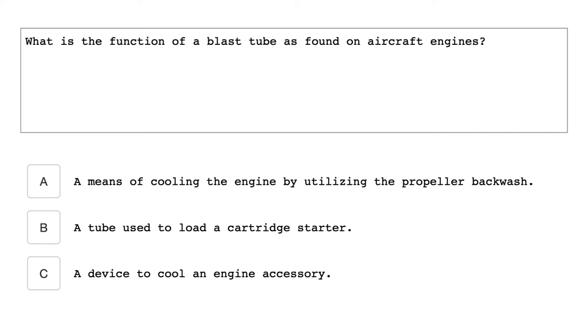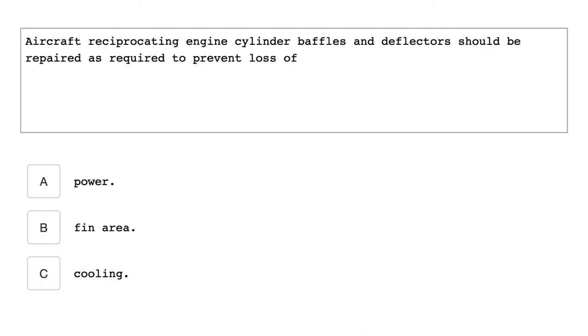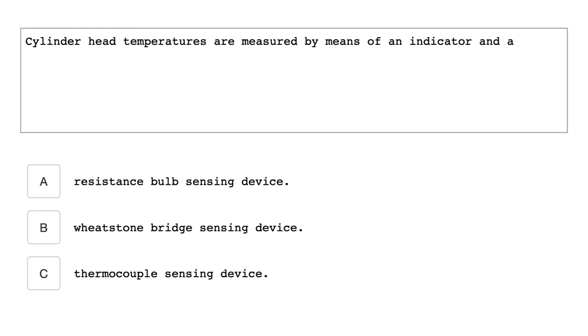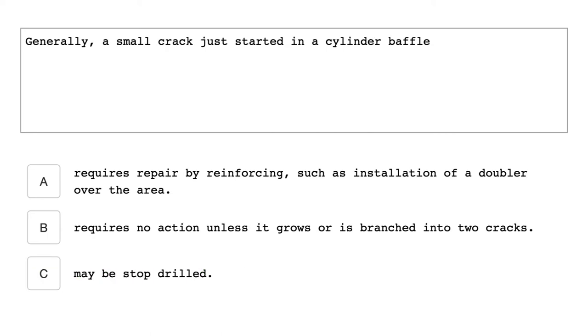What is the function of a blast tube as found on aircraft engines? A device to cool an engine accessory. Aircraft reciprocating engine cylinder baffles and deflectors should be repaired as required to prevent loss of cooling. Cylinder temperatures are measured by means of an indicator in a thermocouple sensing device. Generally, a small crack just started in a cylinder baffle may be stop-drilled.